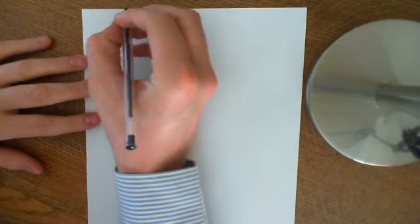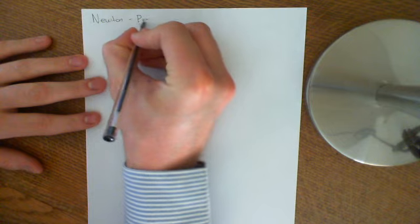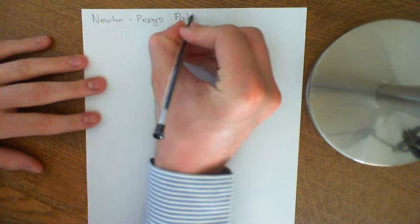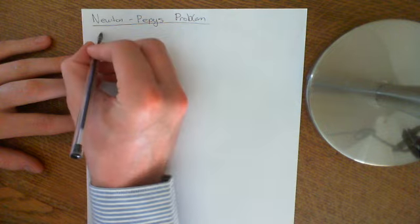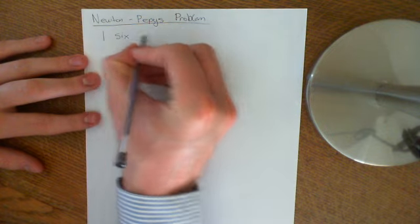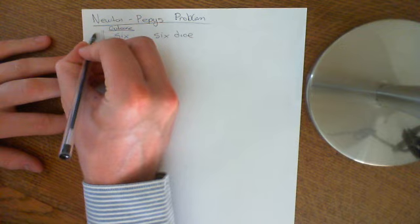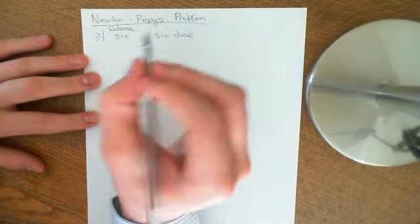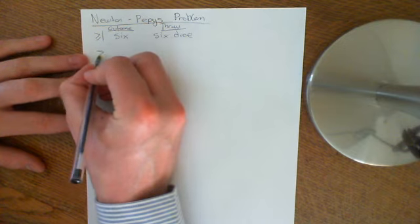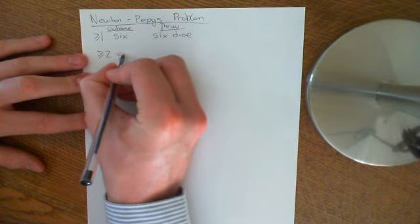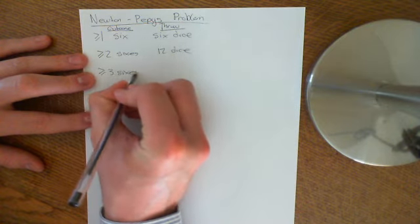Welcome to this problem on another very famous problem in probability called the Newton-Pepys problem. The Newton-Pepys problem is very simple. Pepys wanted to know which outcome is more likely: getting at least one six when you throw six dice, or at least two sixes when you throw twelve dice, or at least three sixes when you throw eighteen dice.